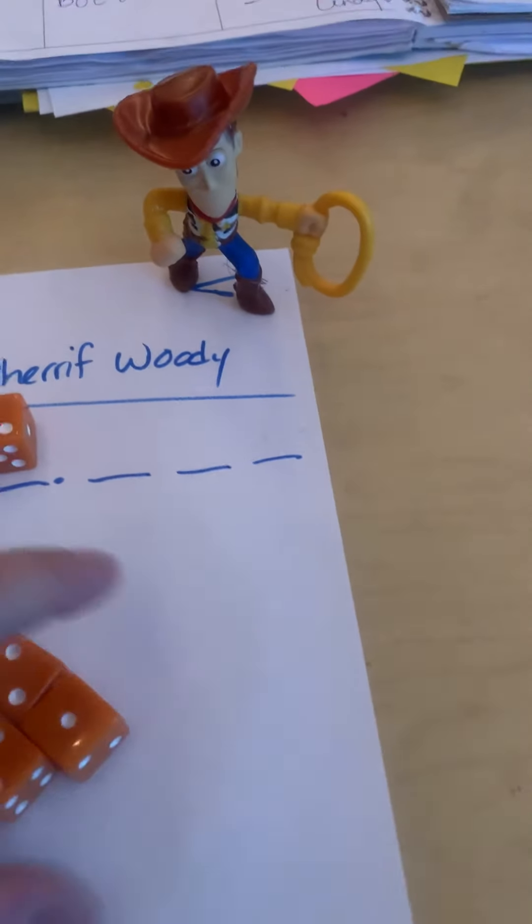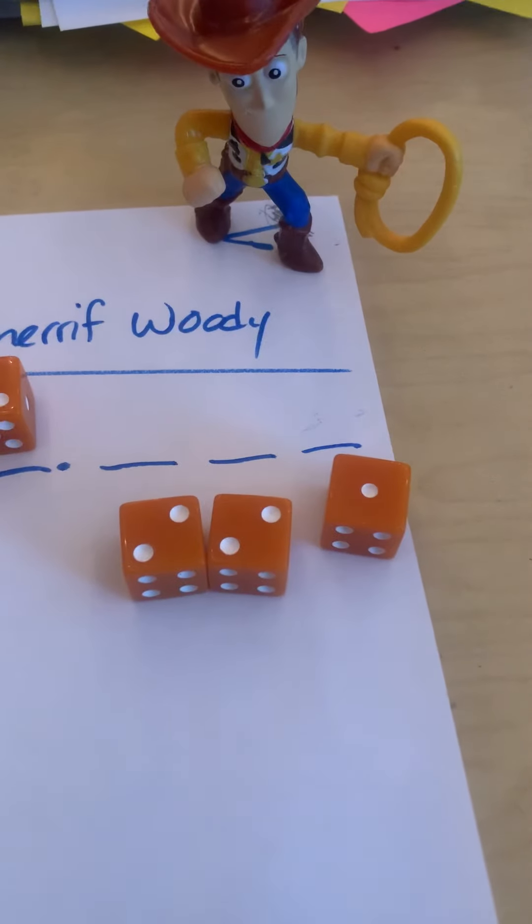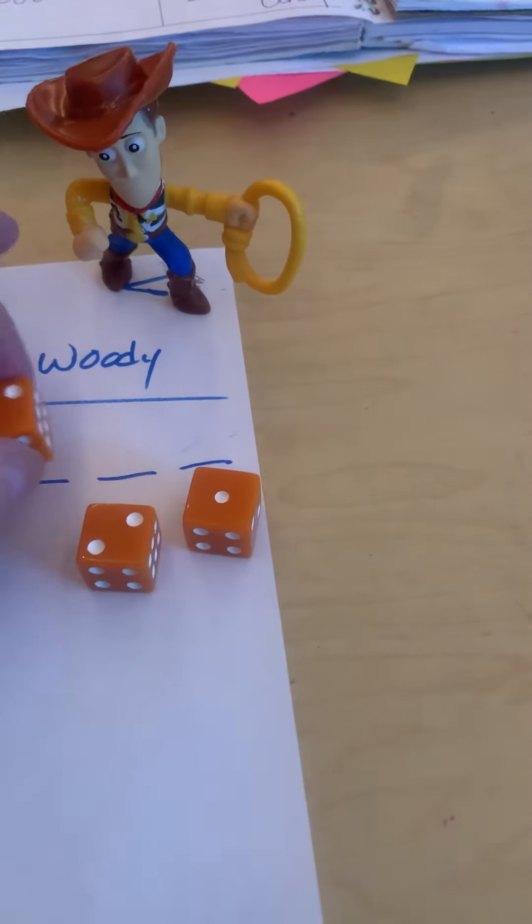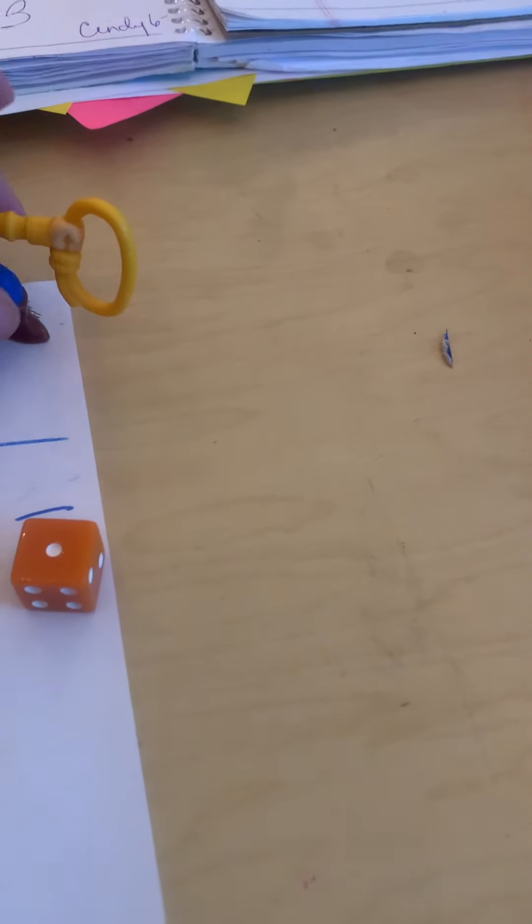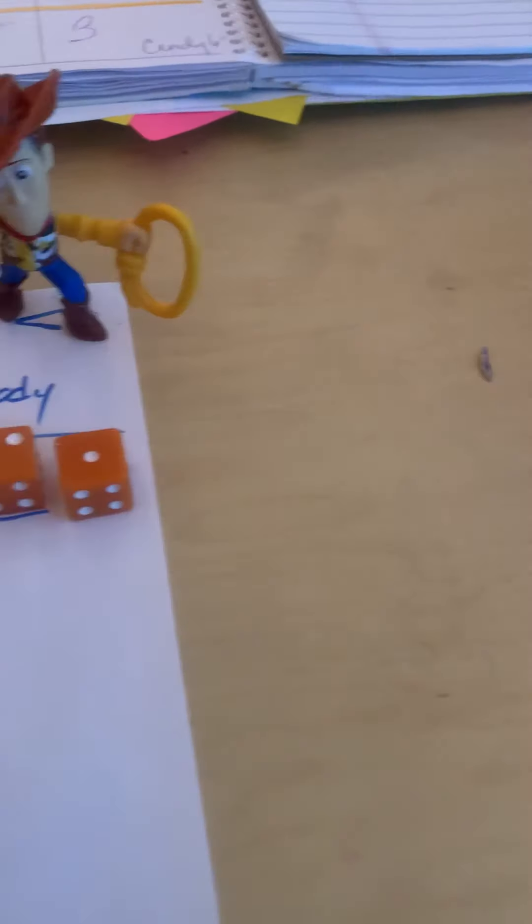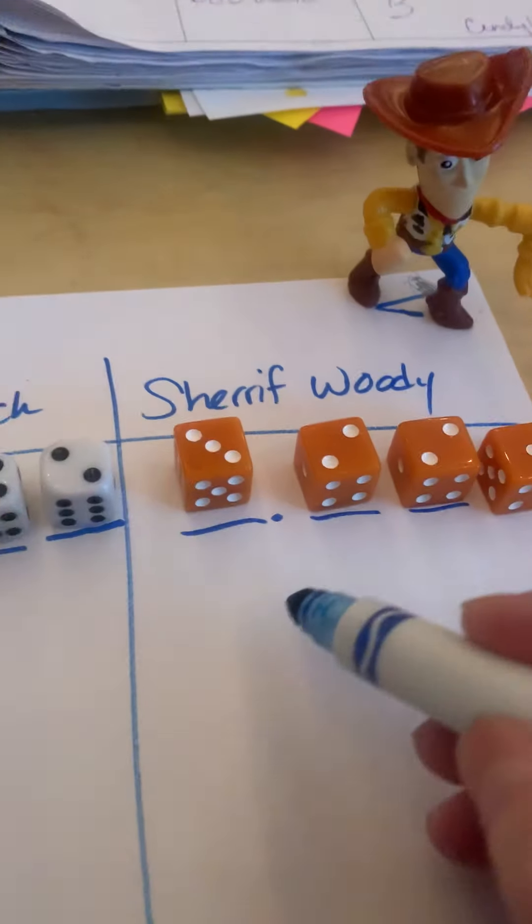So if I'm trying to make the largest number, we're going to put that one first. And then let's see, we have a two, a two, and a one, so we're going to put the two largest numbers—whoops, sorry about that, Sheriff Woody—and the one.